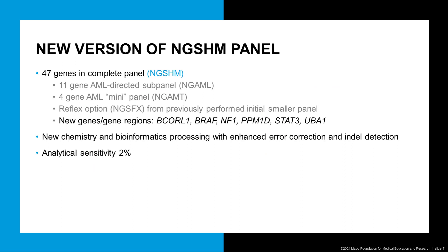The new version of NGSHM will retain the same mnemonic and will go up to 47 genes. This is a net increase of five genes, in that one genetic target has been removed and six new ones have been added. The new parent panel will also include the ability to order the same two AML-focused subpanels — the NGAML and NGAMT — and the content there is not changing. The reflex testing option will also remain as well.